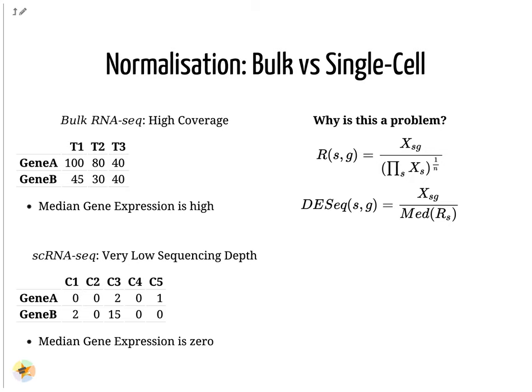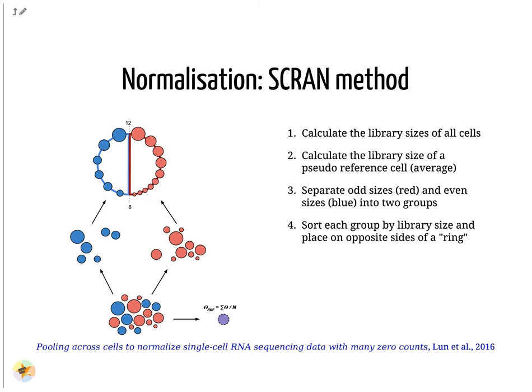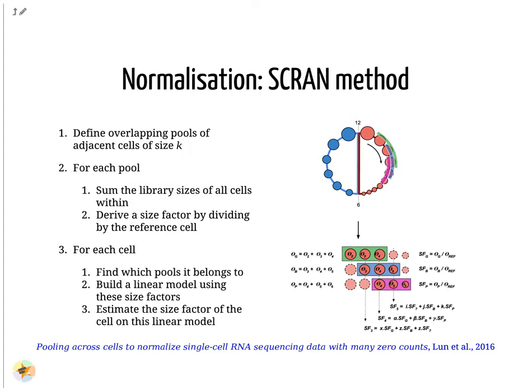But if the median gene expression is zero, as is often the case with single-cell data, then we have the problem of dividing by zero. There are methods to get around these zero counts. One such method is the SCRAN method, which works by creating overlapping pools of cells such that any individual cell is characterized by cells of similar library sizes. The method involves splitting all cells into an odd and even group by their library size and arranging them onto a ring structure where neighboring cells on the ring have similar sizes. Overlapping pools of fixed sizes are defined, resulting in each cell being defined by multiple pools. A linear model for that cell can then be built by the pools it occurs within, and normalization factors for all cells can be determined this way.